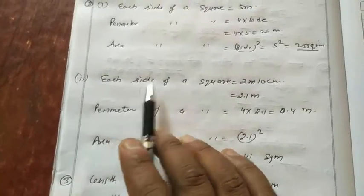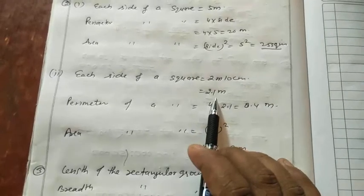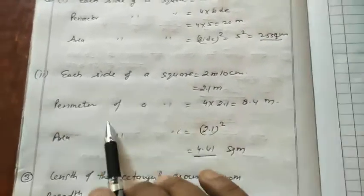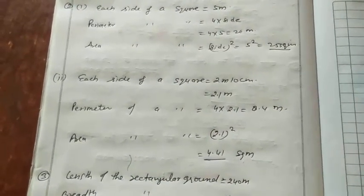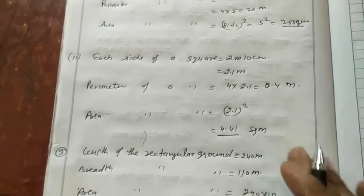Next question. Each side of a square is 2 meters 10 centimeters. When we convert 2 meters 10 centimeters into meters, this is 2.1 meters. Perimeter of the square: 4 into 2.1 equals 8.4 meters. Area of the square: 2.1 whole squared equals 4.41 square meters.